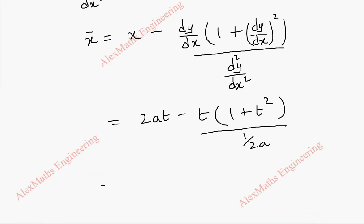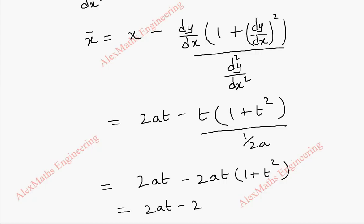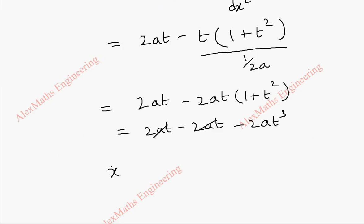The 2a multiplies into the numerator, giving 2at minus 2at times (1 + (dy/dx)²). Multiplying inside: 2at minus 2at minus 2at³. After cancelling, we get x̄ equal to minus 2at³.